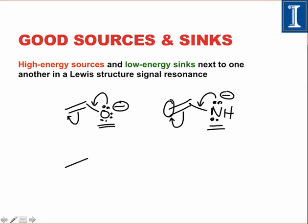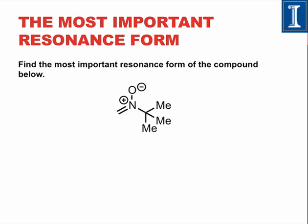Similarly, we can make a comparison to an allyl anion. In this case, carbon being the least electronegative element is sharing a lot of negative charge with the other carbon in the structure. Applying this idea in another case allows us to find the most important resonance form for a particular molecule. To do this, one of the first things we'll do is look for the strongest electron sources and the strongest electron sinks in a particular molecule.